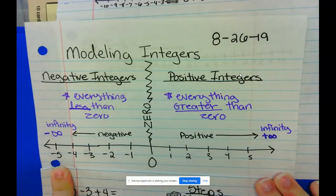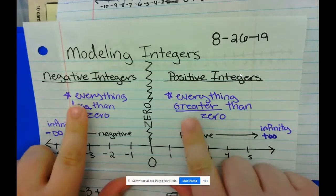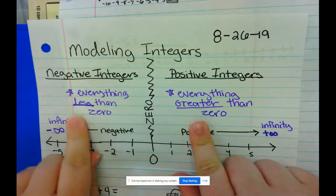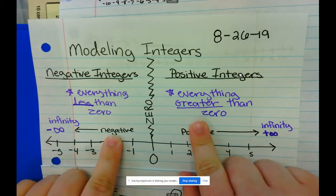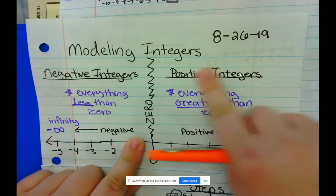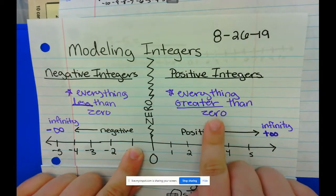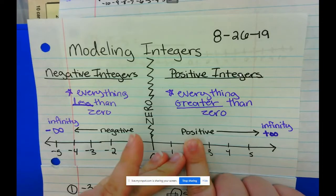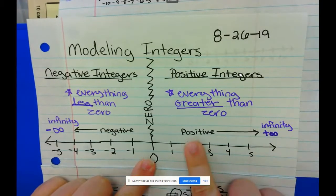Talking about integers, there are negative and positive integers. Everything on the left side of a number line, on the left side of the zero, is going to be negative. Anything less than zero, and anything greater than zero, or on the right side of a number line, is going to be positive. So from zero on the left side is negative, and from zero on the right side, it's going to be positive.